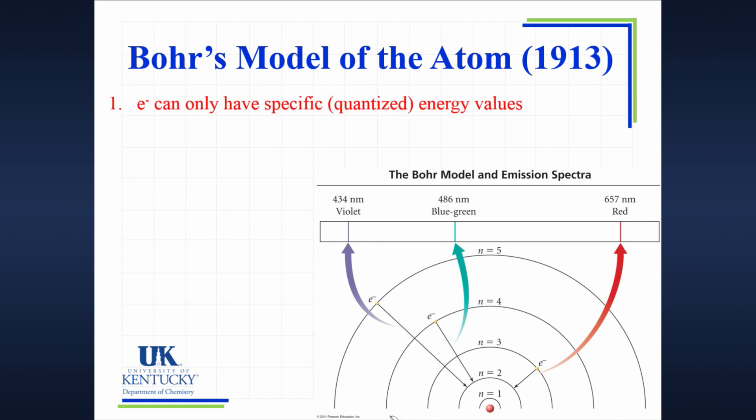What he thought was happening is that electrons could only have specific, and again we have this idea of quantized. An electron can only have specific quantized energy values. And that's what's being represented in this model.